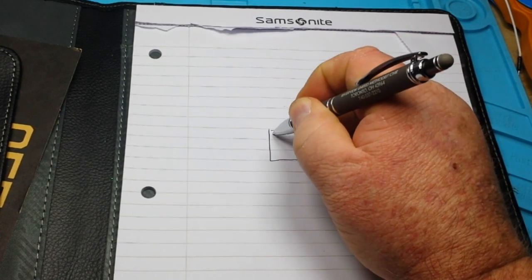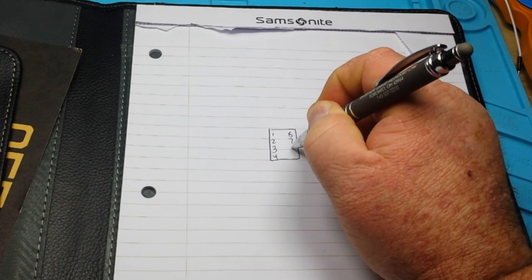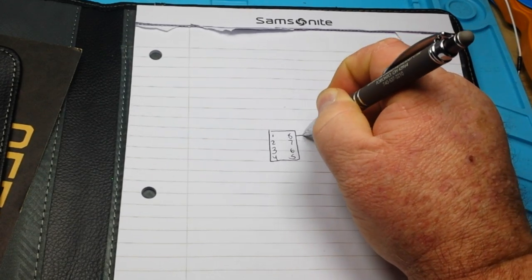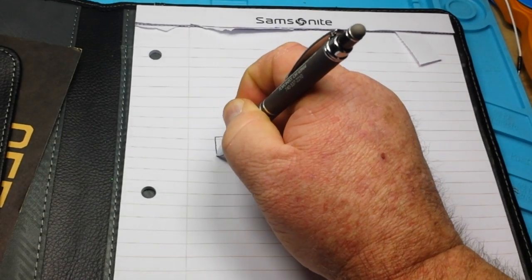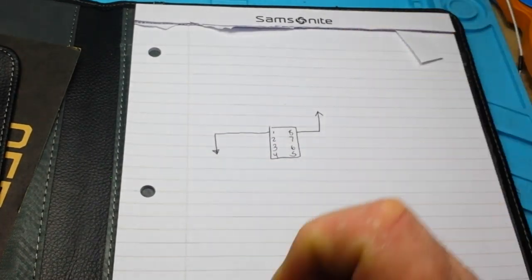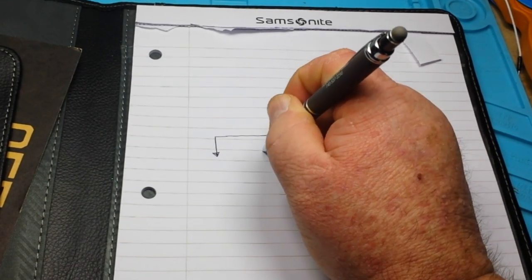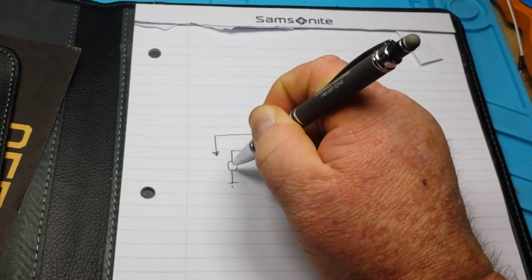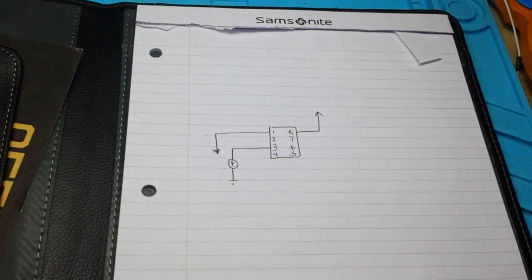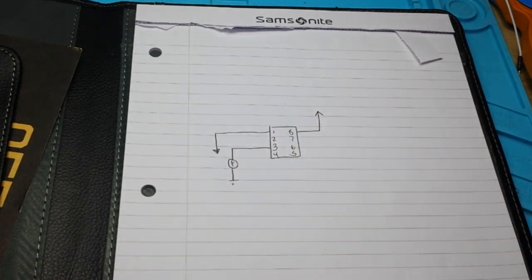So here's our 555. Pin 8 of course goes to VCC. Pin 1 goes to ground. Pin 3 is our output and in this case it is going to go to our load which is a lamp. And keep in mind pin 3 starts up low.